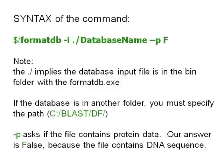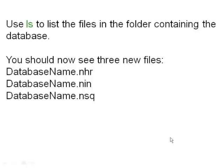In this case we've moved the file into the bin folder. Dash-p is asking whether the file is a protein file, and it's not, so we tell it false — put an F there. After issuing this command, in the bin folder we should see three new files created. The files have the database name and then the appendage NHR, NIN, or NSQ. If we use the ls command and see those three files were created, we know it's worked.